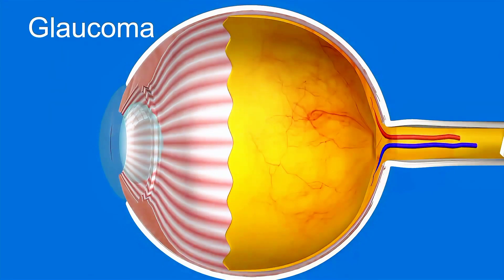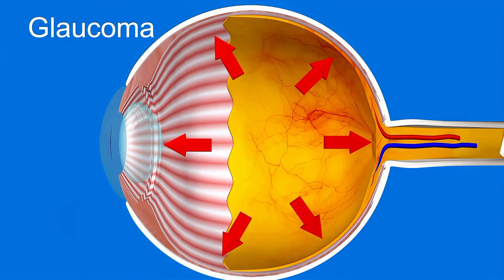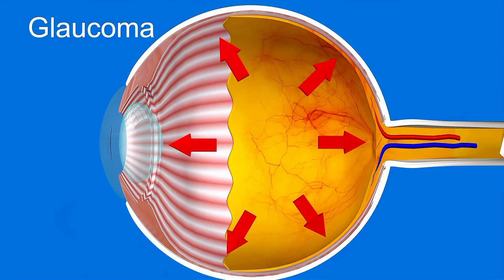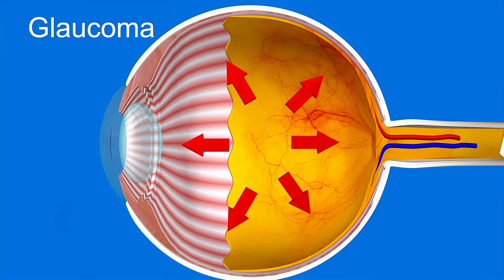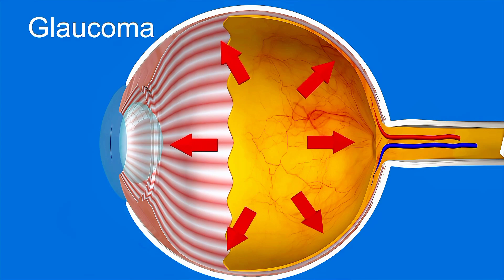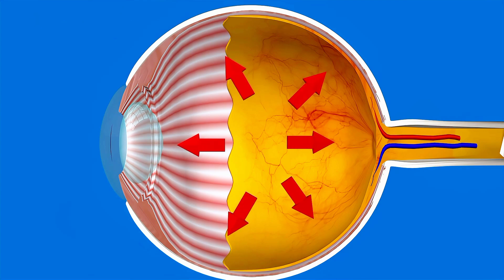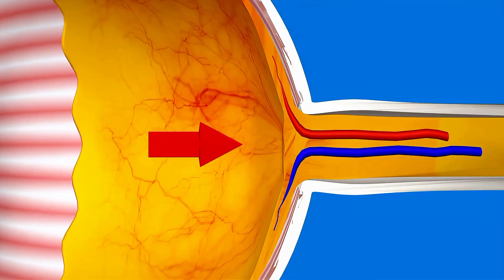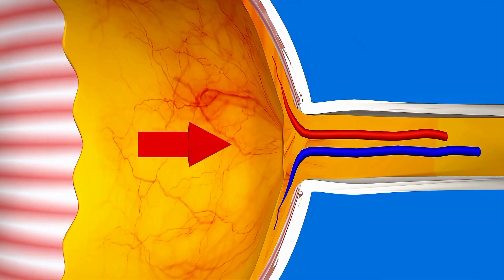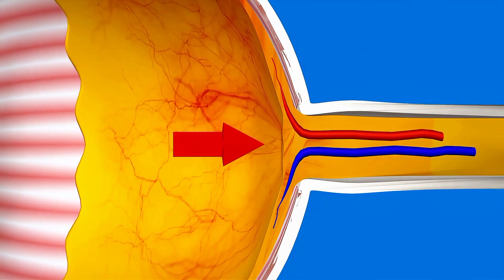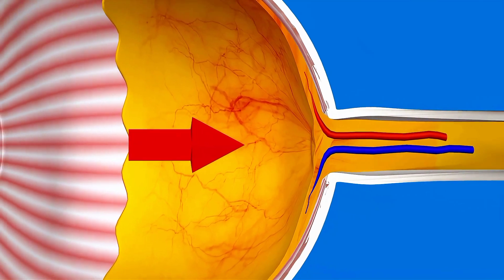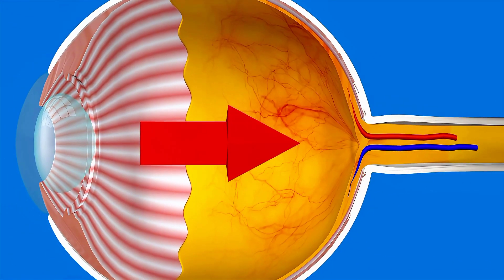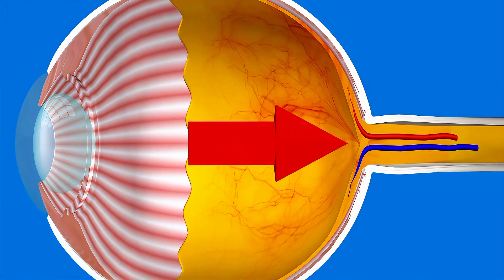Glaucoma usually occurs when there is an increase in pressure in the eye, but can occur when there is normal eye pressure as well. This pressure causes damage to the optic nerve, leading to a decrease in peripheral vision and potentially blindness.